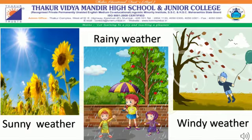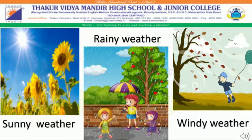Let me explain to you all these weather types. Sunny weather: the sun shines bright and it is very hot. We call this weather as sunny weather. Rainy weather: in rainy weather, the sky looks cloudy as the dark black clouds surround the sky.